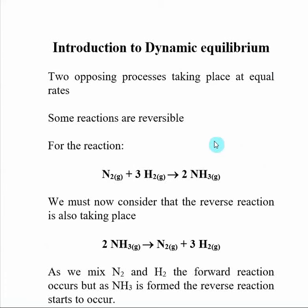Really what's happening is there are two reactions going on: a forward reaction and a reverse reaction. At equilibrium, the rate of the forward reaction and the rate of the reverse reaction are equal to each other, and so everything stays constant.